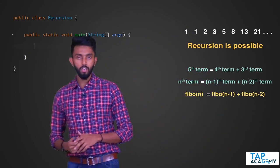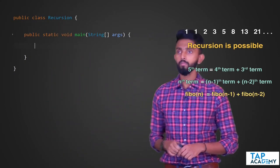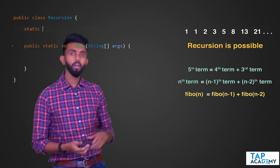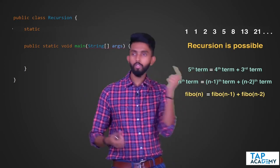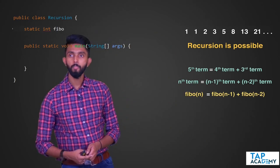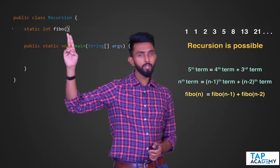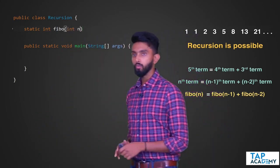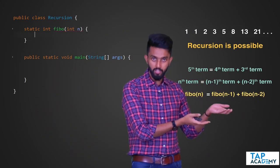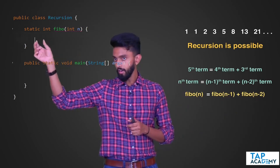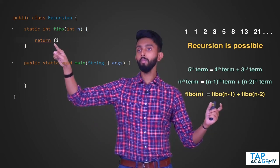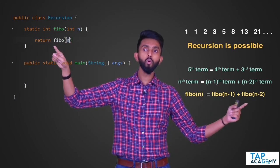I am going to create a static function. It must return a term for me, which is an integer. So I'll write: static int fibonacci(int n). Inside, I will write the recurrence relationship: return fibo(n-1) + fibo(n-2).